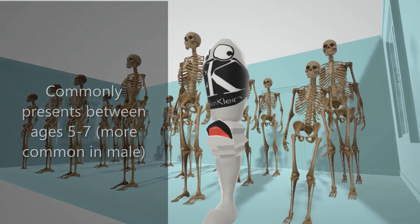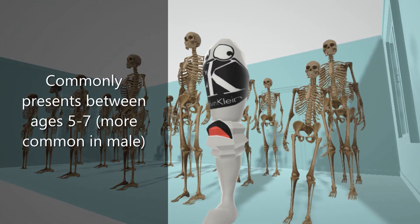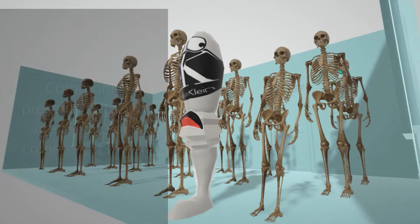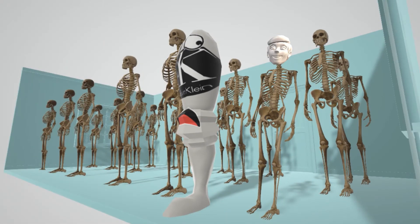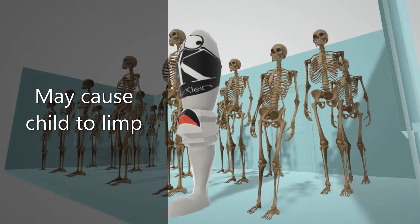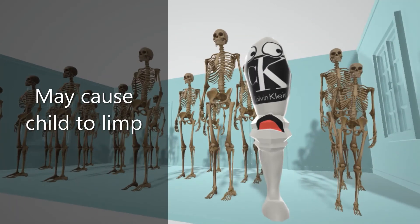The reason why the skeleton is small is because it commonly presents between five to seven years of age, more common in males at a four to one ratio — this skeleton here is a male. There's an insidious onset of hip pain that may cause the child to limp, which is why the skeleton is limping.